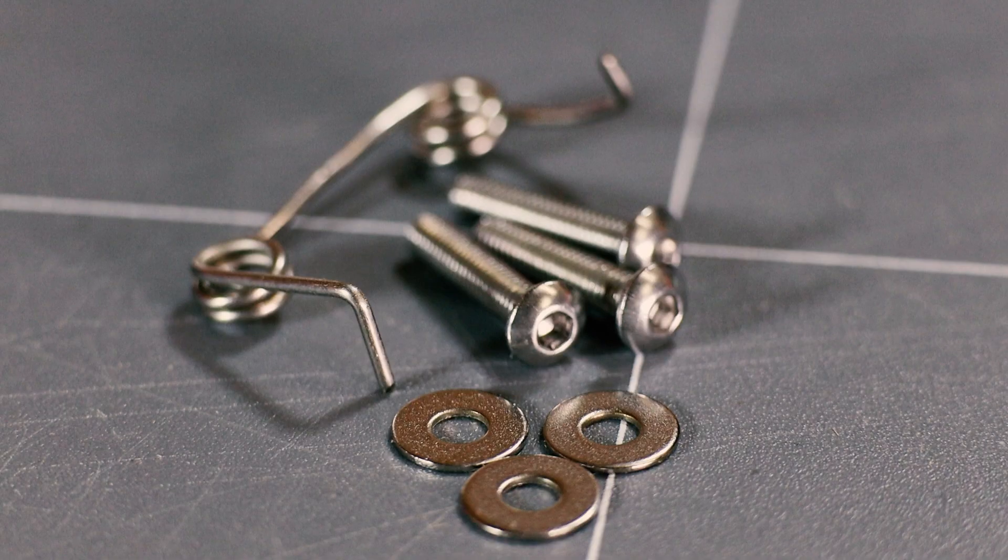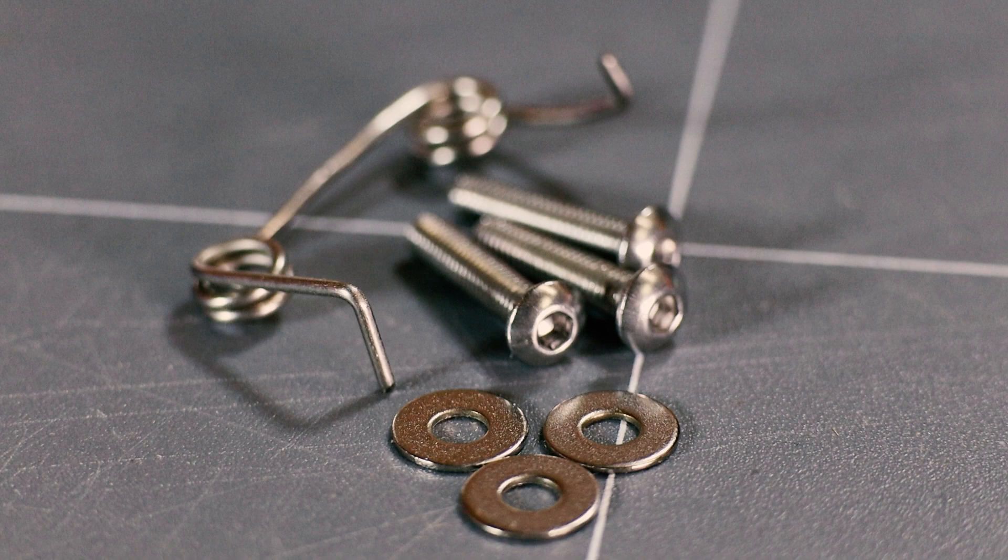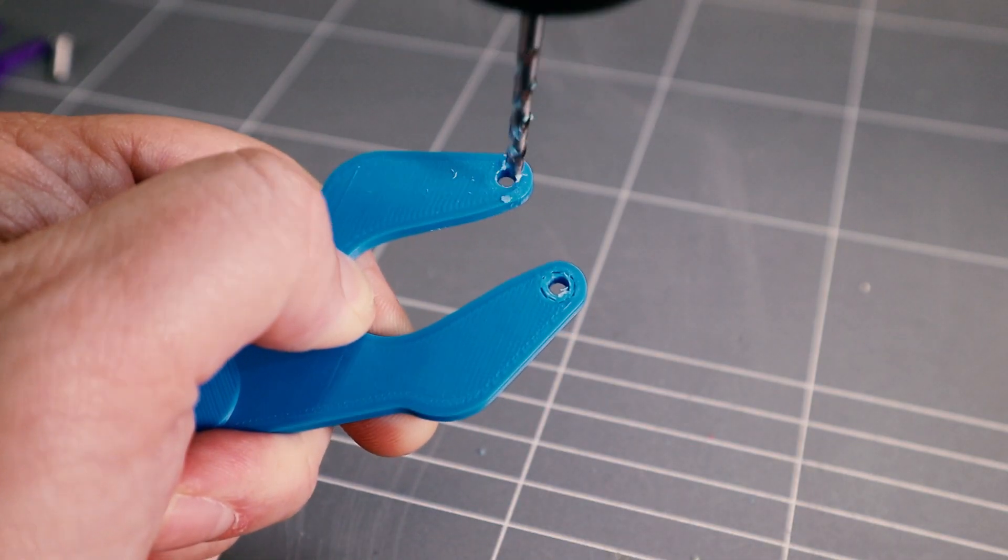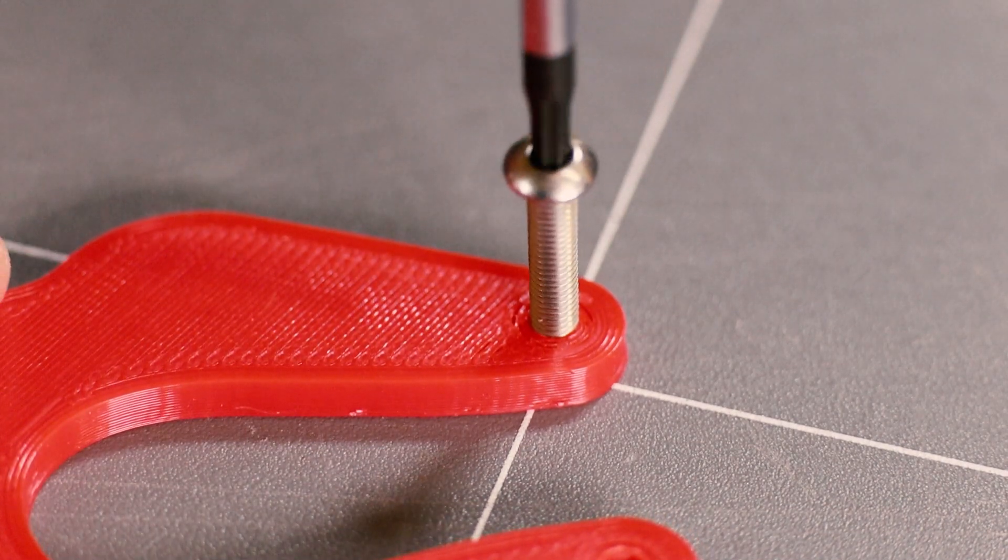You'll need three M3 by 14mm screws, three 3mm washers, and a DIY torsion spring made from a paperclip. More on that later. We'll start by cleaning up the holes and then pre-tap them with the M3 screws.